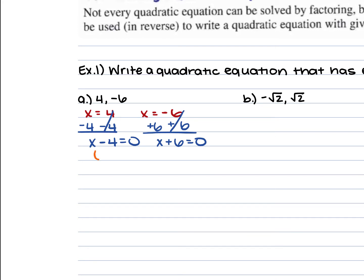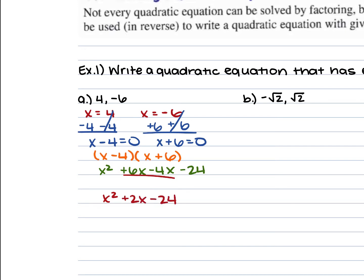So we have (x minus 4) as well as (x plus 6). If we FOIL these out: x times x is x squared, x times 6 is 6x, negative 4 times x is negative 4x, and negative 4 times 6 is negative 24. We combine the like terms in the middle, and we have x squared plus 2x minus 24 is equal to 0.